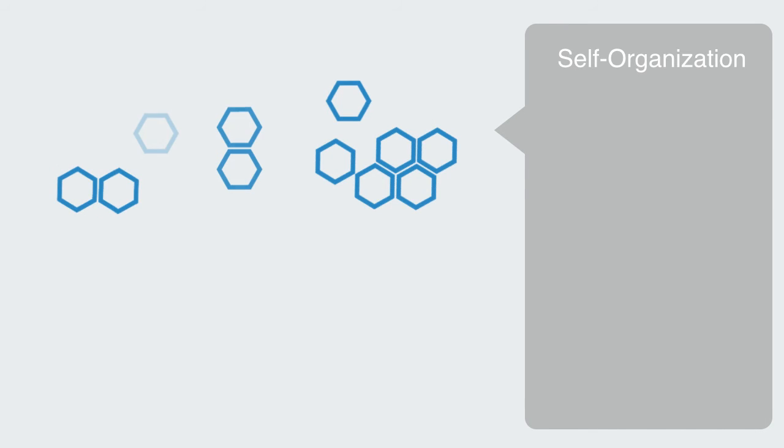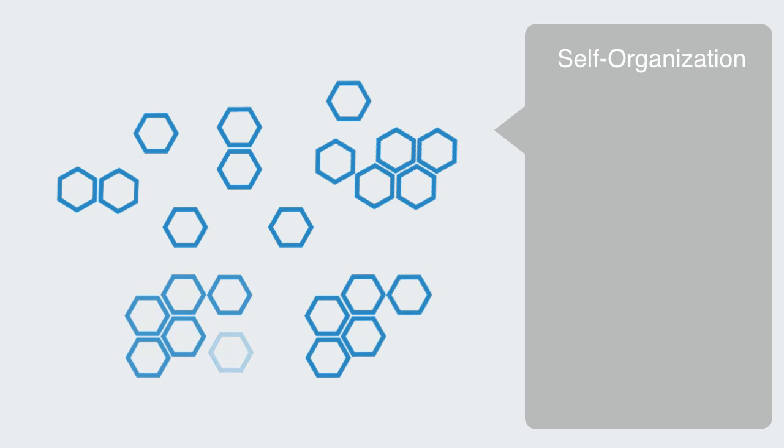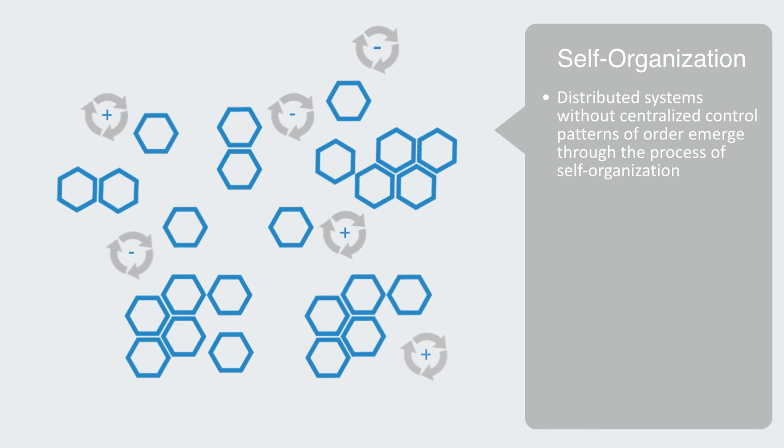Most of all, causal loop diagrams help us to understand self-organization. As we saw in the previous module, complex engineered systems are distributed systems without centralized control. Patterns of order emerge through the process of self-organization, and feedback loops are key to the dynamics of this process.